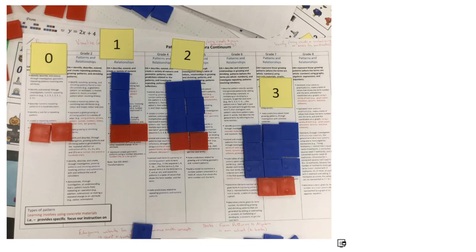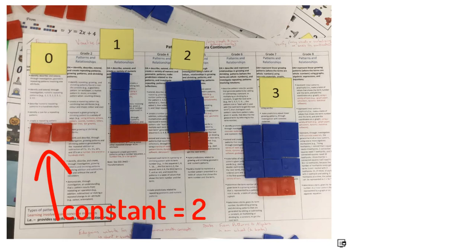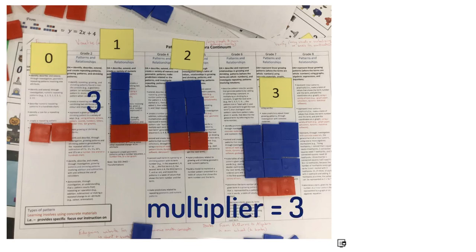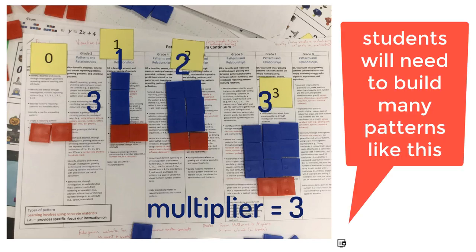Looking at some student work, we noticed that after we consolidated the last pattern and talked about the array or area model of multiplication, all groups now used that. We can see the constant in red — two tiles at each position number — and then a different number of blue tiles at each position number, which is three times the position number. We can see a three by one rectangle, three by two, and three by three. This group also added position zero, where there are no blue tiles.